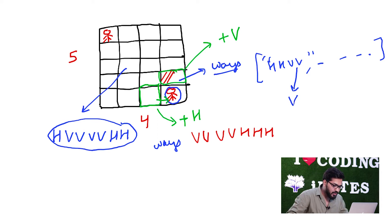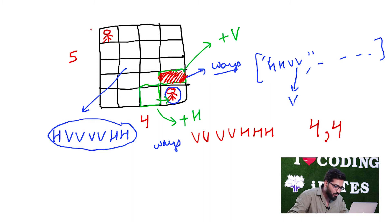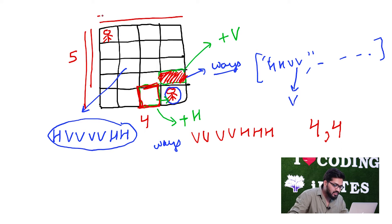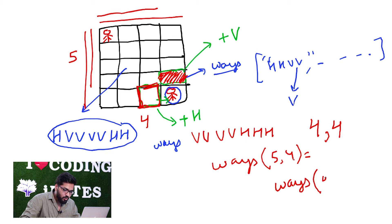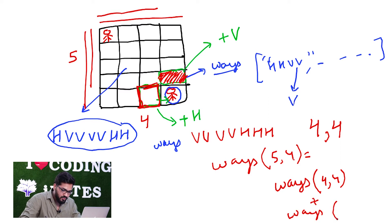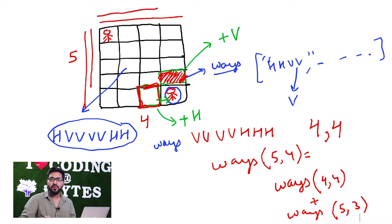So, to find paths for this particular box, we pass 4 rows and 4 columns for the box above, and 5 rows and 3 columns for the box to the left. So if we have a function ways, then ways(5, 4) equals: take all ways(4, 4) and add V to each, plus take all ways(5, 3) and add H to each. This is how we are going to reach towards our answer.